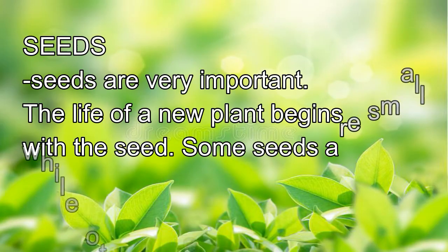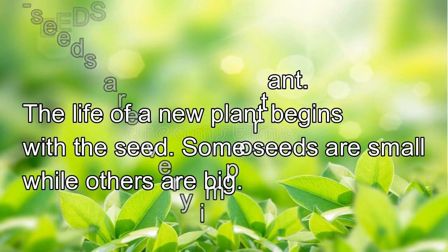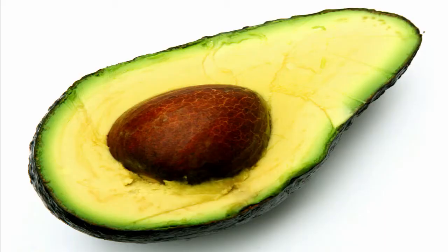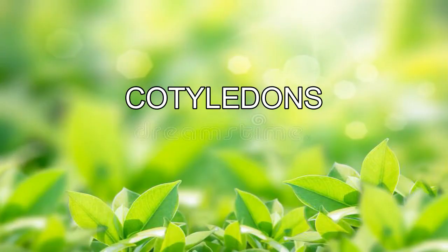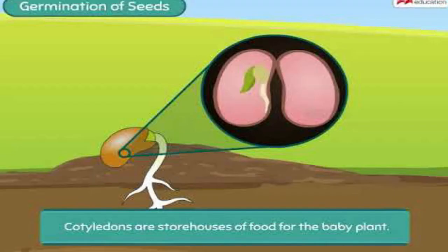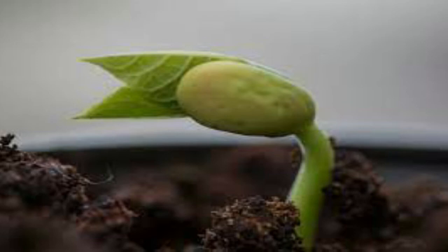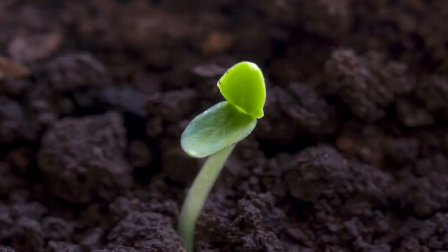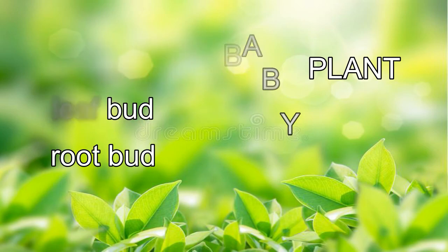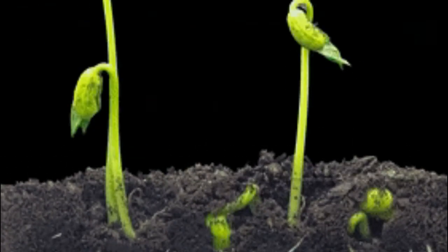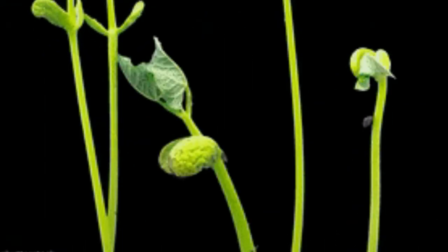Seeds are very important — the life of a new plant begins with a seed. Some seeds are small while others are big. A seed has a baby plant inside wrapped around by the cotyledons. The cotyledons store food, which the baby plant uses until it grows up from the seed and is ready to make its own food. The baby plant consists of two parts: the leaf bud and the root bud. As the seed gets water, the baby plant breaks the seed cover and sprouts. The root bud grows downward and the leaf bud pushes upward to form a stem.